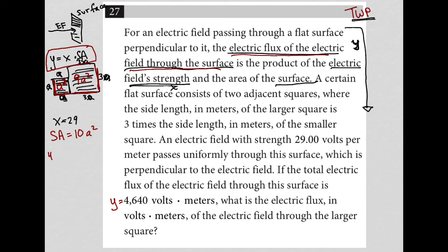So I can say Y equals 29 times 10A squared. But the question tells me that Y is 4640. So I can write that as 4640 equals 29 times 10A squared, simplifying that to 4640 equals 290A squared.